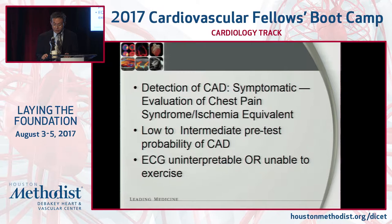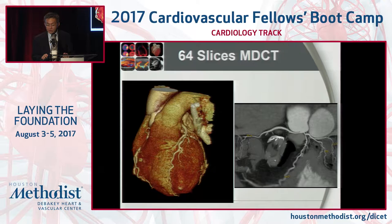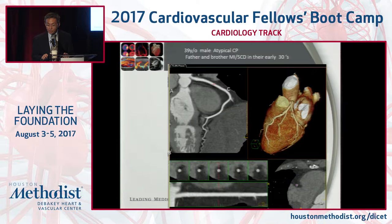Indications include any symptomatic patient with chest pain syndrome of ischemic type with low to intermediate pre-test likelihood. In the UK, coronary CTA is now the first test ordered instead of a stress test. With a regular 64-slice CT, done well, you can obtain exquisite 3D rendered images. For example, a patient with atypical chest pain and very strong family history of MI was found to have clean coronaries — he was lucky.